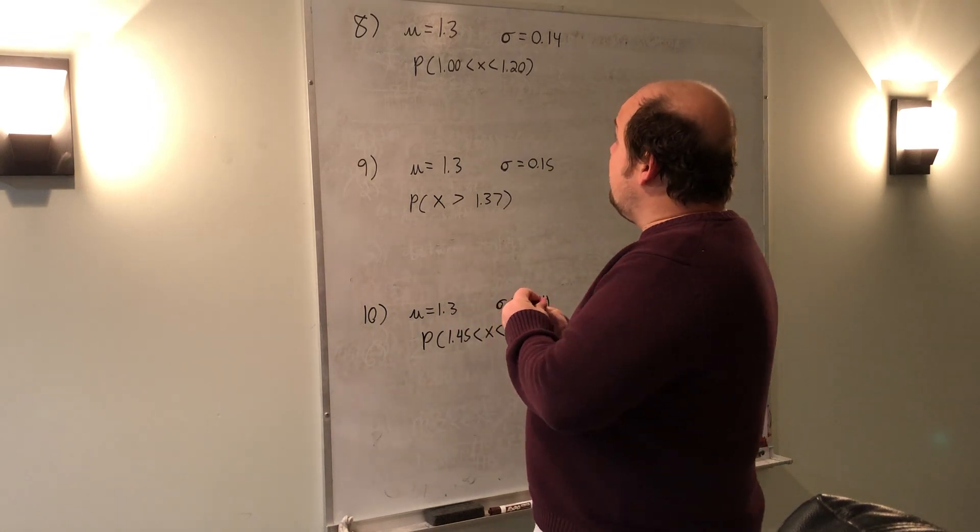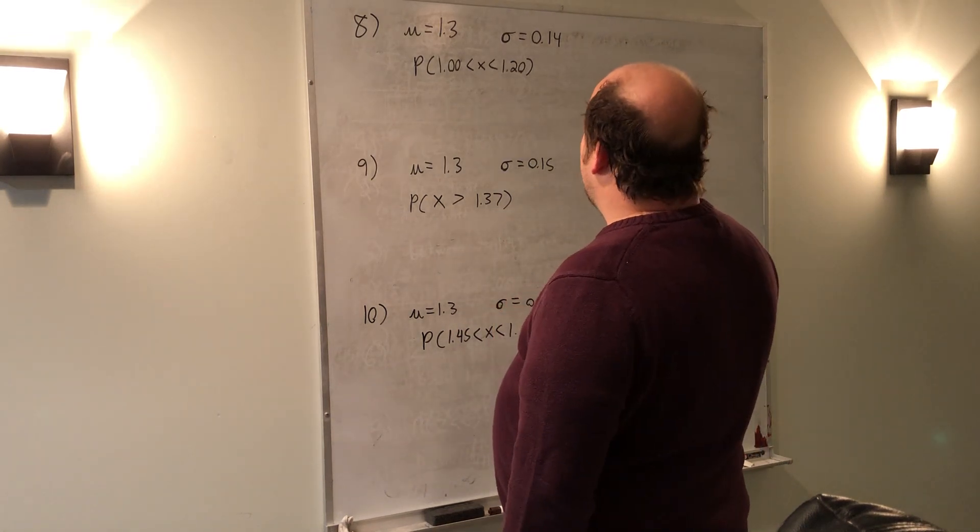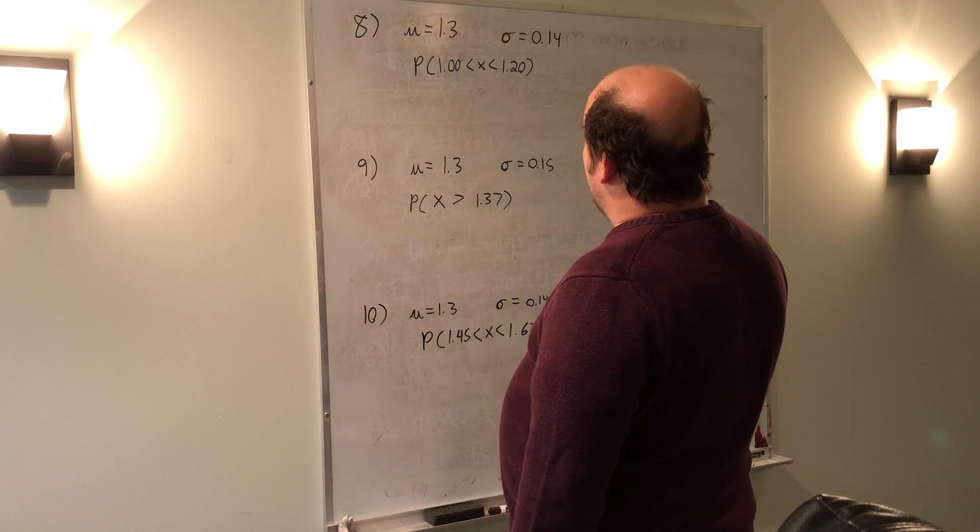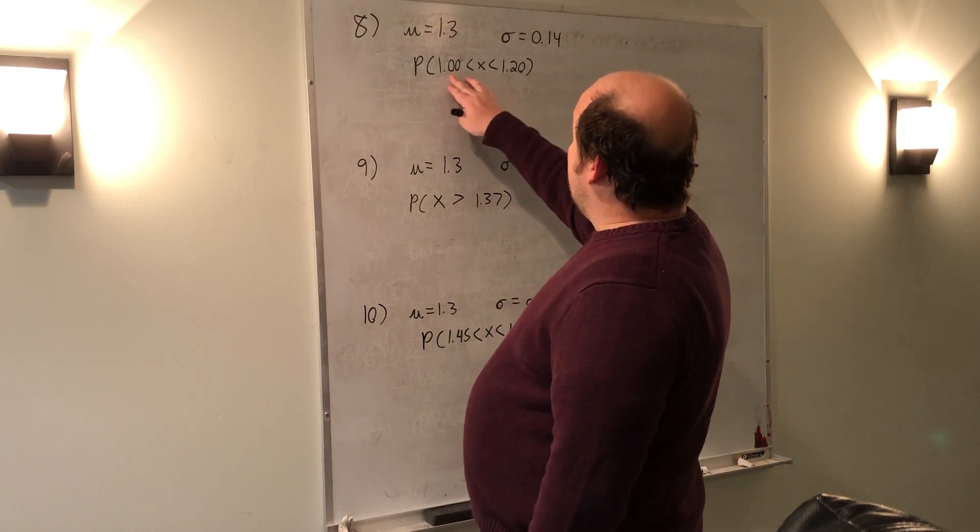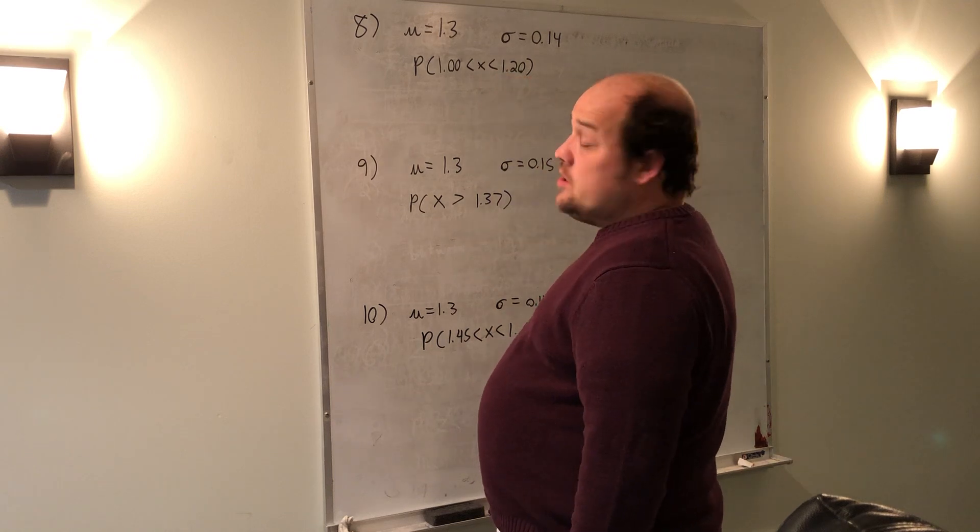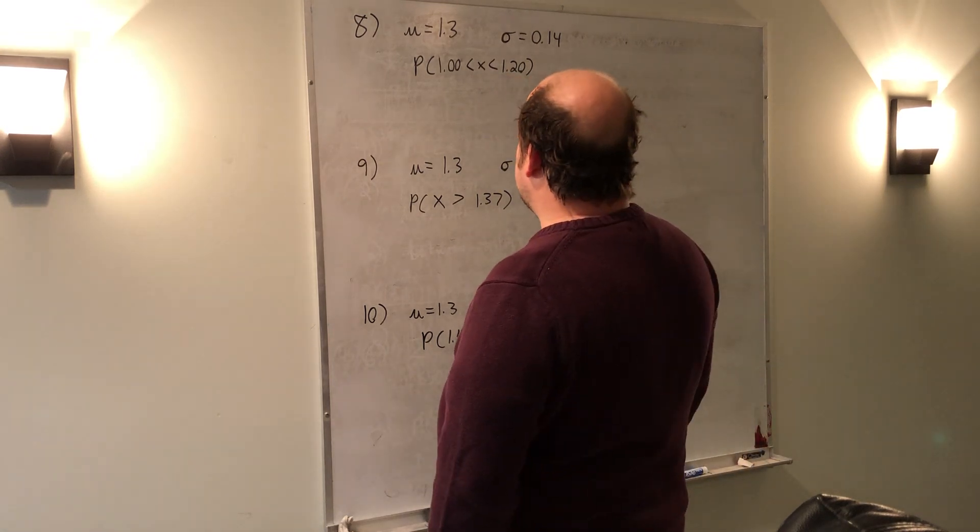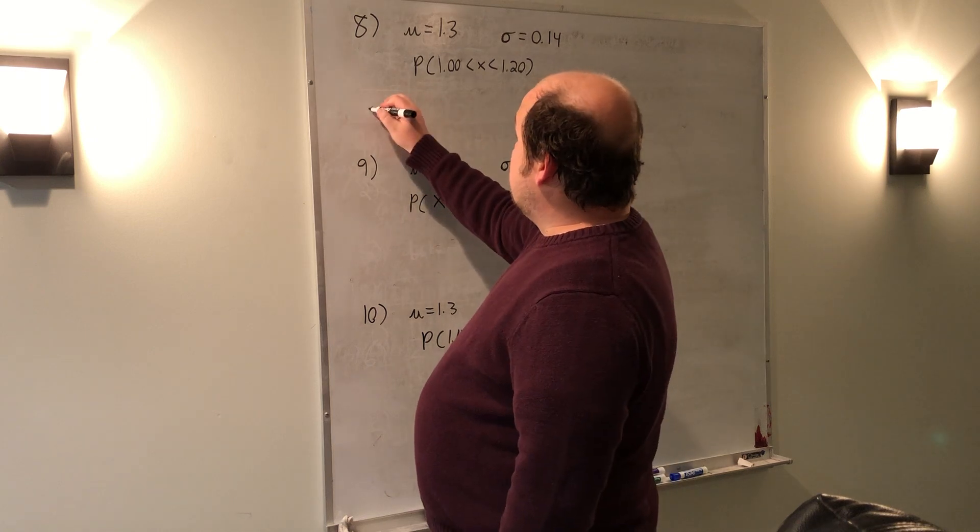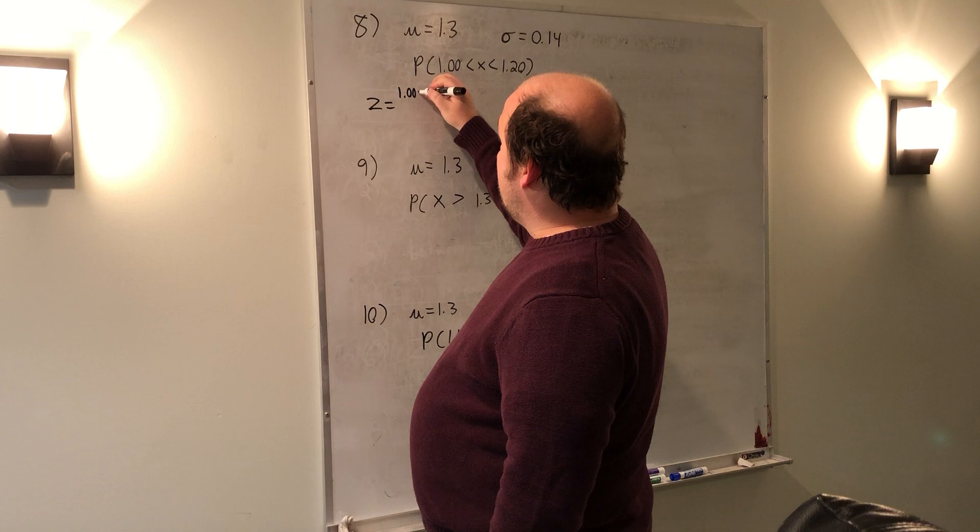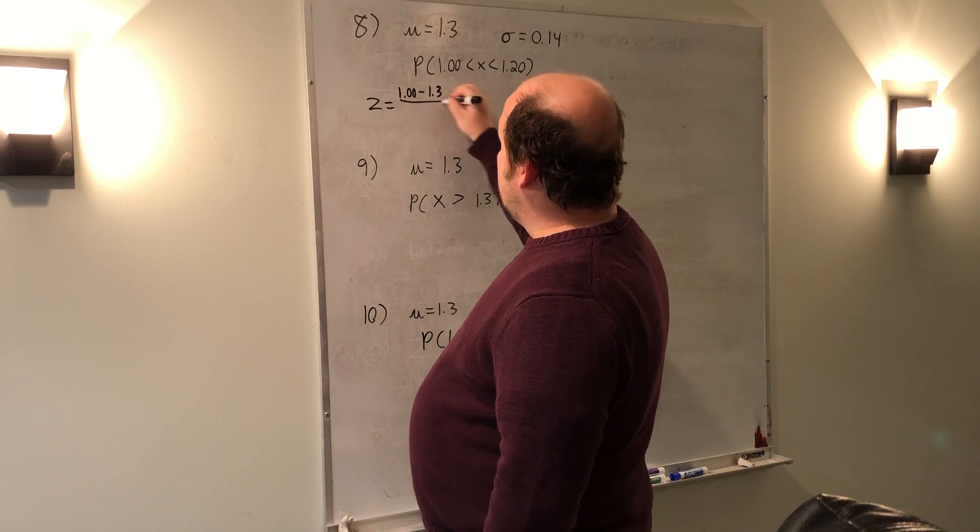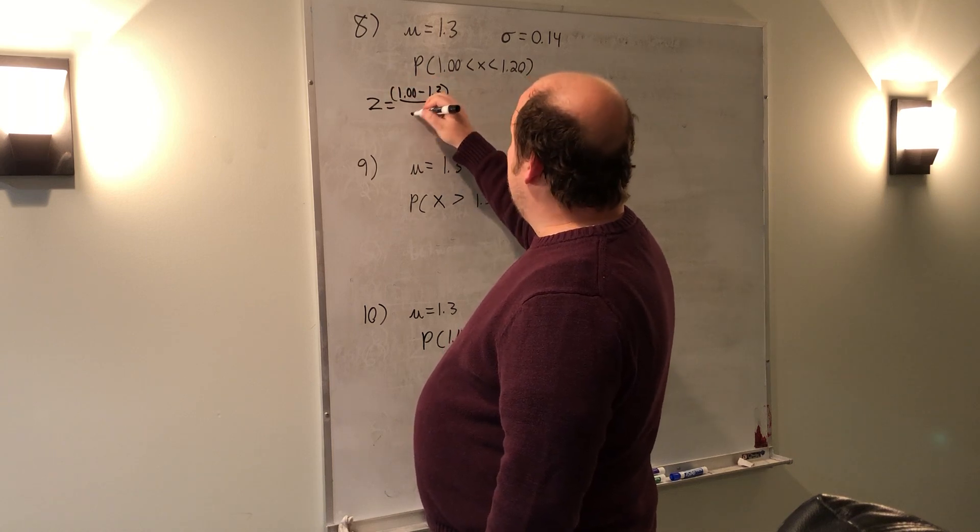So the first question, number eight, gives us a mean of 1.3, a standard deviation of 0.14, and asks us what's the probability that x falls between 1.0 and 1.20. To do a between question like this, we need to find z-scores for each. So the z-score, when I'm worried about 1.0, will be 1.00 minus 1.3 divided by 0.14.